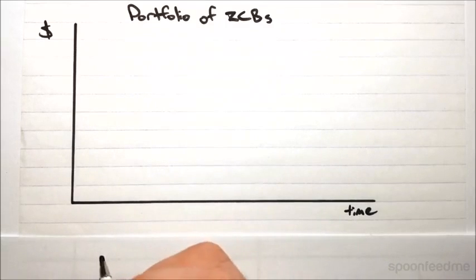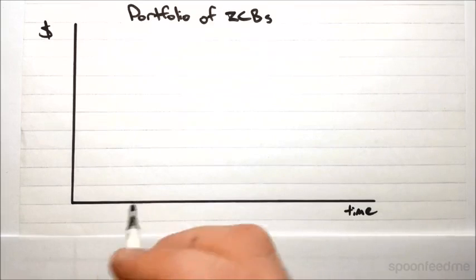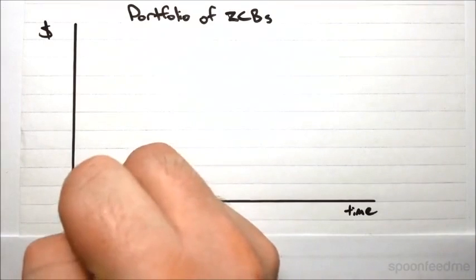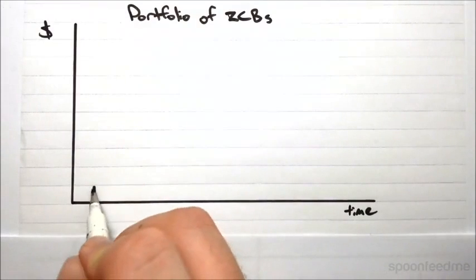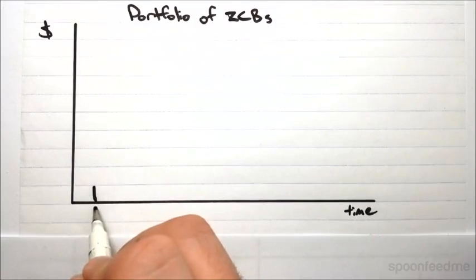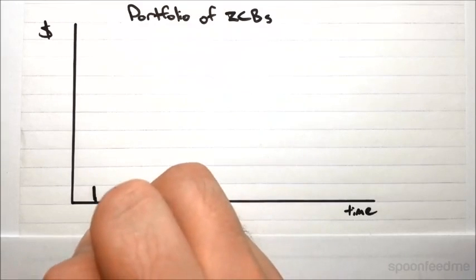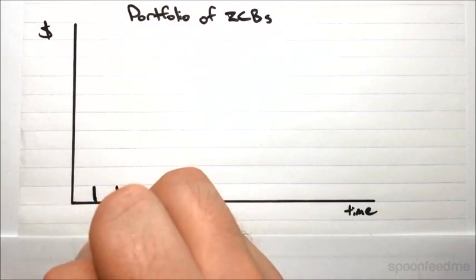So let's say that I get a one-year zero-coupon bond. And after one year, I get my payment of the face value. And maybe I just buy one with a relatively small face value. And then let's say that on top of this one-year zero-coupon bond, I also buy a two-year zero-coupon bond with the same face value.